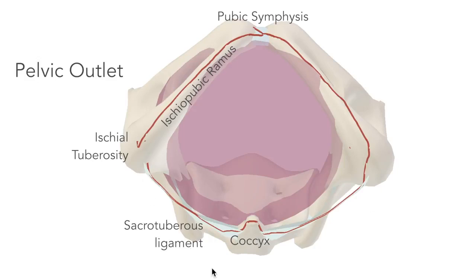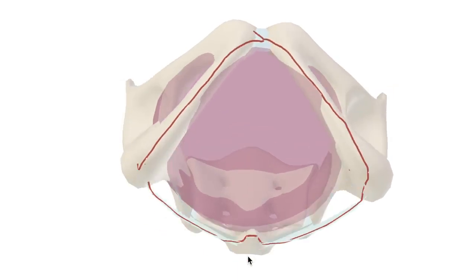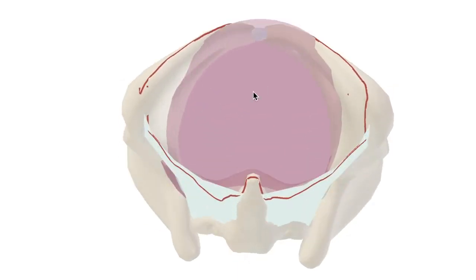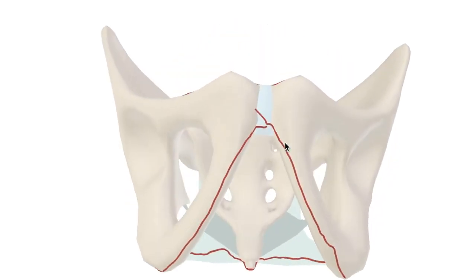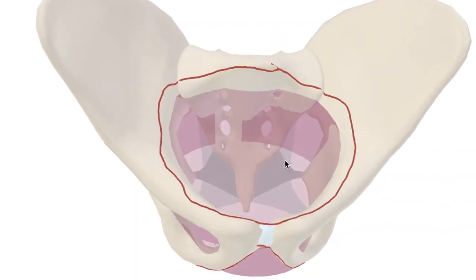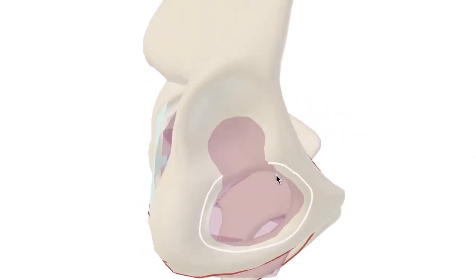It's notably bigger in females because we have to fit a whole baby through here. So before we wrap up, brief mention should go to the other prominent foramina in the pelvis. This is the obturator foramen here.